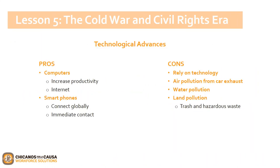Another major change in recent years has been technology. Technology has helped us advance in science, medicine, and our personal lives. Computers and smartphones are examples that have helped revolutionize the United States. However, technology has also caused additional problems, such as polluting the air with exhaust from increased car production, polluting water with acid rain from burning coal to generate electricity, and polluting land with trash and hazardous waste.